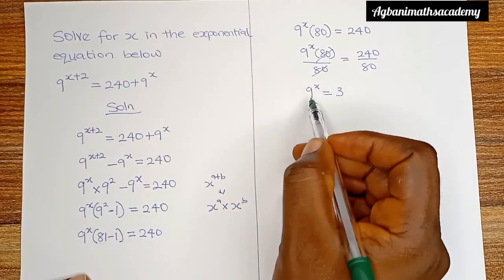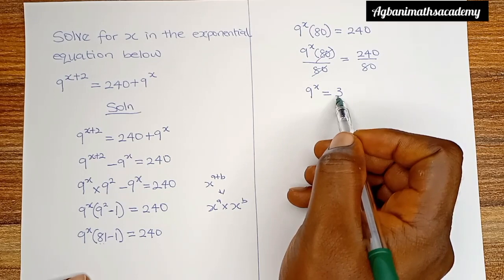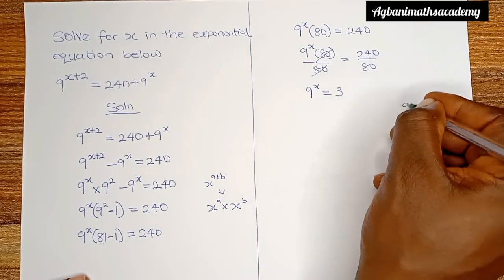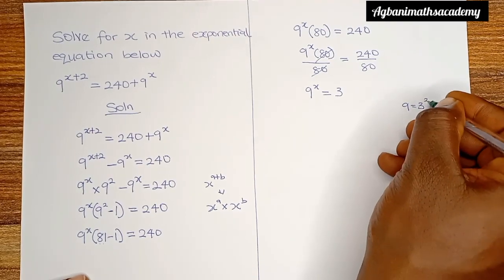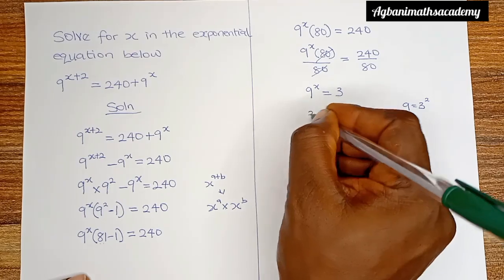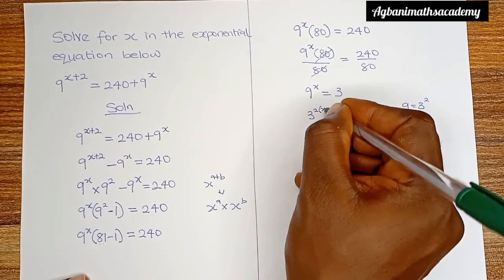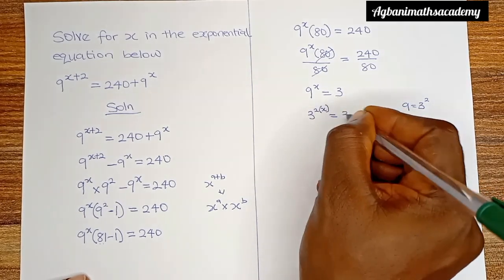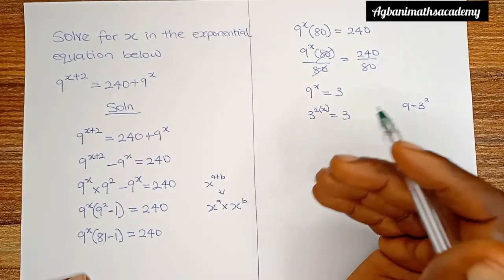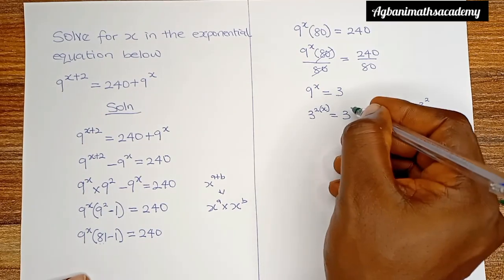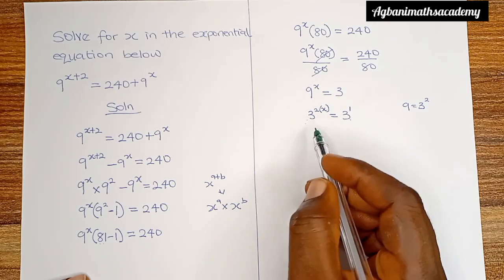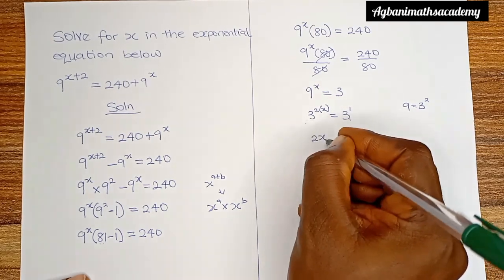Moving forward, we have a base of 9 on the left and a base of 3 on the right, but we can convert the base of 9 to become base 3 because 9 is the same thing as 3 raised to the power 2. So instead of 9 we introduce 3 raised to the power 2, giving us 3 raised to the power 2x is equal to 3 raised to the power 1. Since the bases are now the same, we equate the powers: 2x is equal to 1.